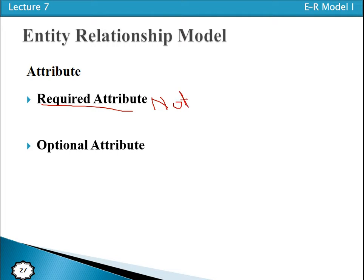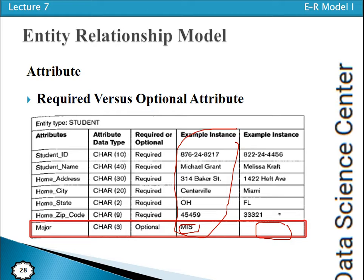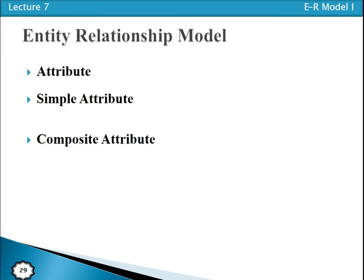For optional attributes, the default value is null — if we have a value it is okay, if we don't have a value then that's fine. For example, student ID, name, address, city, and zip code are required attributes. But a measure like a phone number is optional — it is not specific that all students must have a phone number. So that is an optional attribute. If you have the value that is okay; if you don't have a value, no problem.